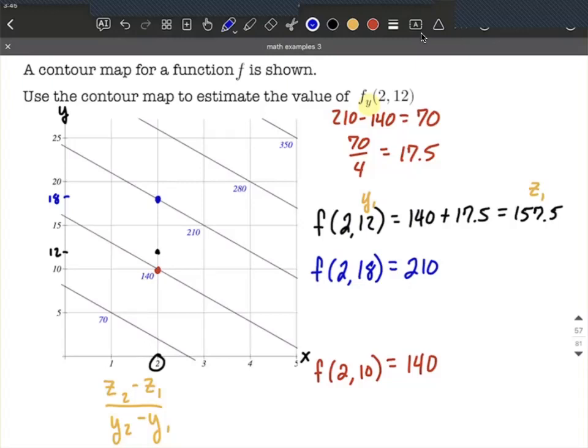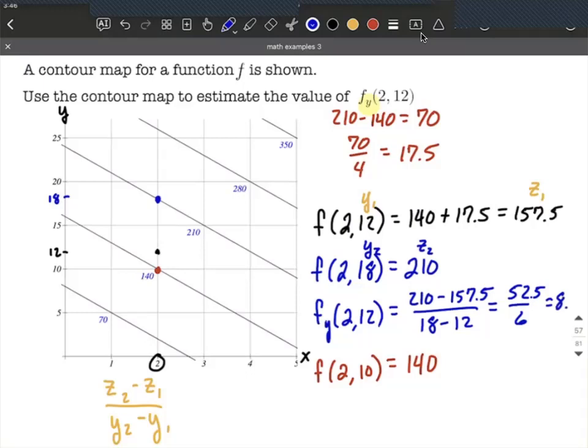All right, so the partial here of 2,12, we can calculate this to be, I'm going to go z2, y2, and filling into that formula, I'm going to go 210 minus 157.5 over 18 minus 12 is going to work out to be 52.5 over 6 or 8.75.